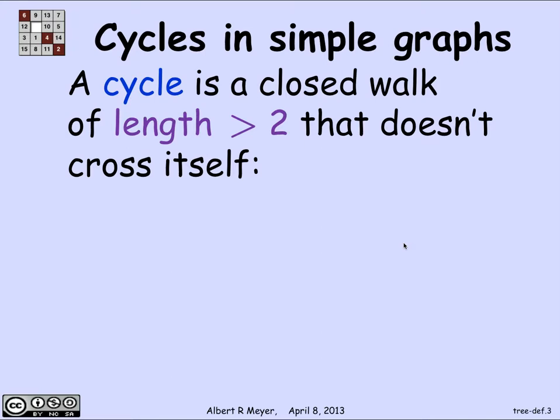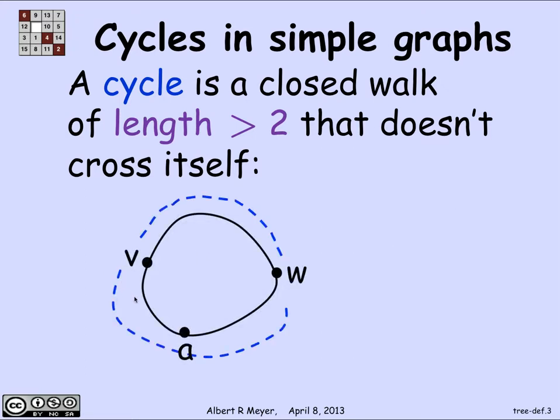Not crossing itself is the standard definition of a cycle that we were using in a directed graph. It simply means that it's a path, except that the beginning and end vertex are the same. So it looks like you start someplace at v, then you go around to a and to w — all distinct vertices as you go around this path, except that the path ends where it starts at v, which is what makes it a cycle.